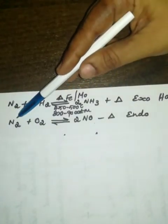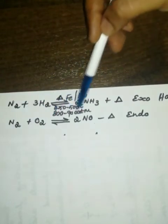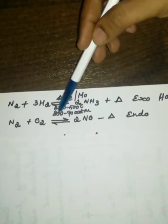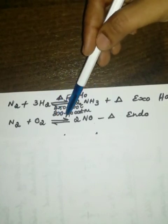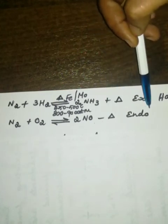The next reaction, as we have seen in the beginning of this lesson, that is, nitrogen with oxygen, 3000 degrees Celsius, you are getting nitrogen monoxide. See, even if you maintain so much of temperature, that much of heat is absorbed. So it is an example of endothermic reaction.